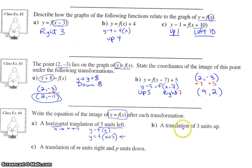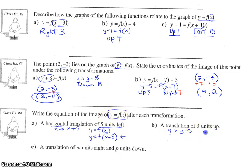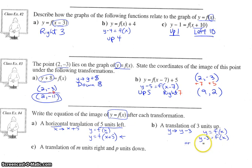For part b, a translation of three units up. Let's do our replacement first — it's up, so y gets replaced with y minus three. Scoop out the y in the original, meaning we'd go from y equals f of x to y minus three equals f of x. Sometimes they rearrange it to get y by itself — isolate y by adding three to both sides, in which case we'd have y equals f of x plus three. The plus three stays outside, it doesn't go in the brackets with the x.